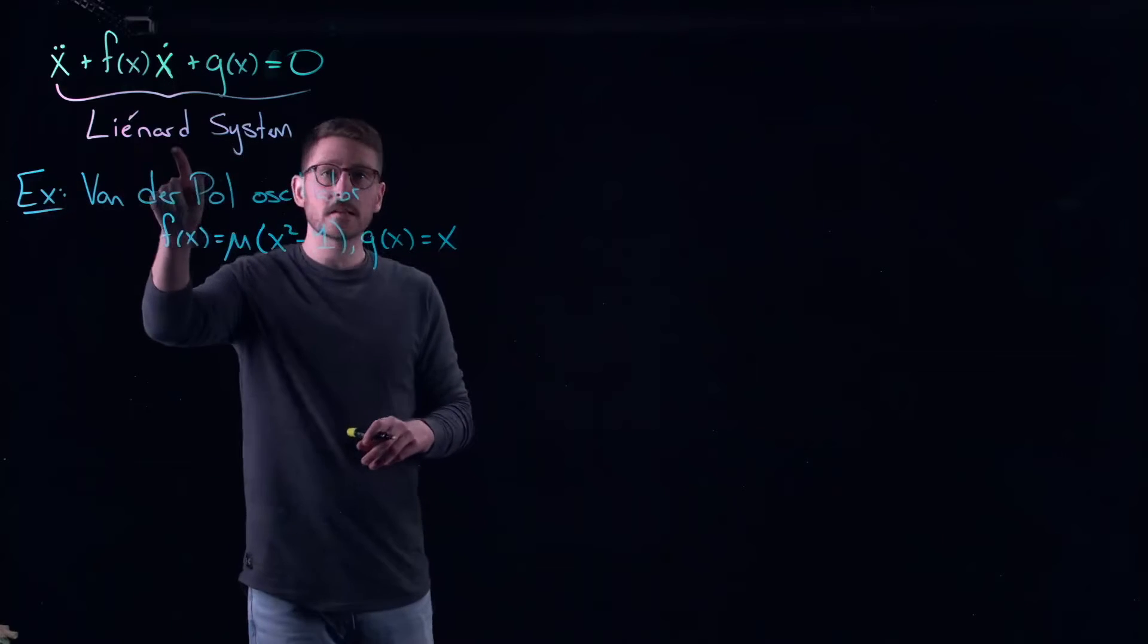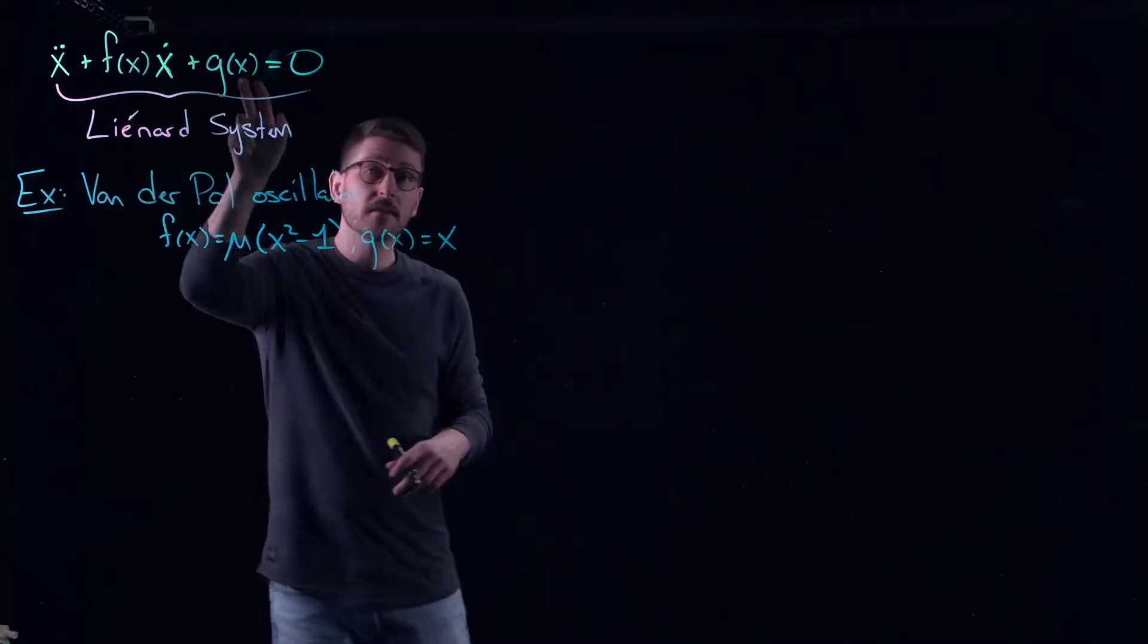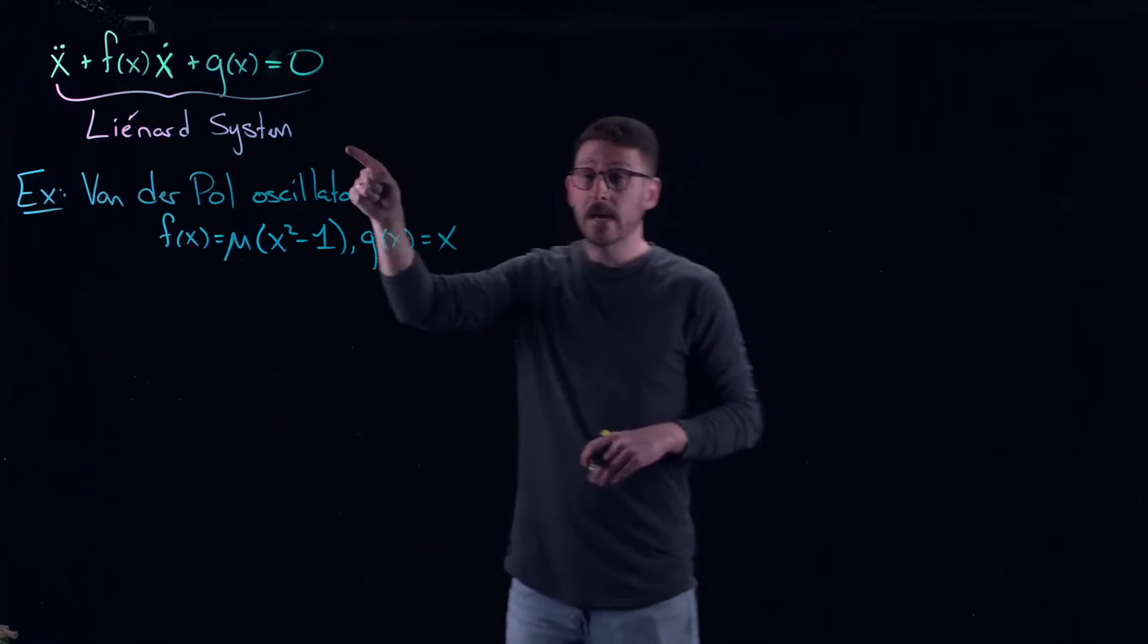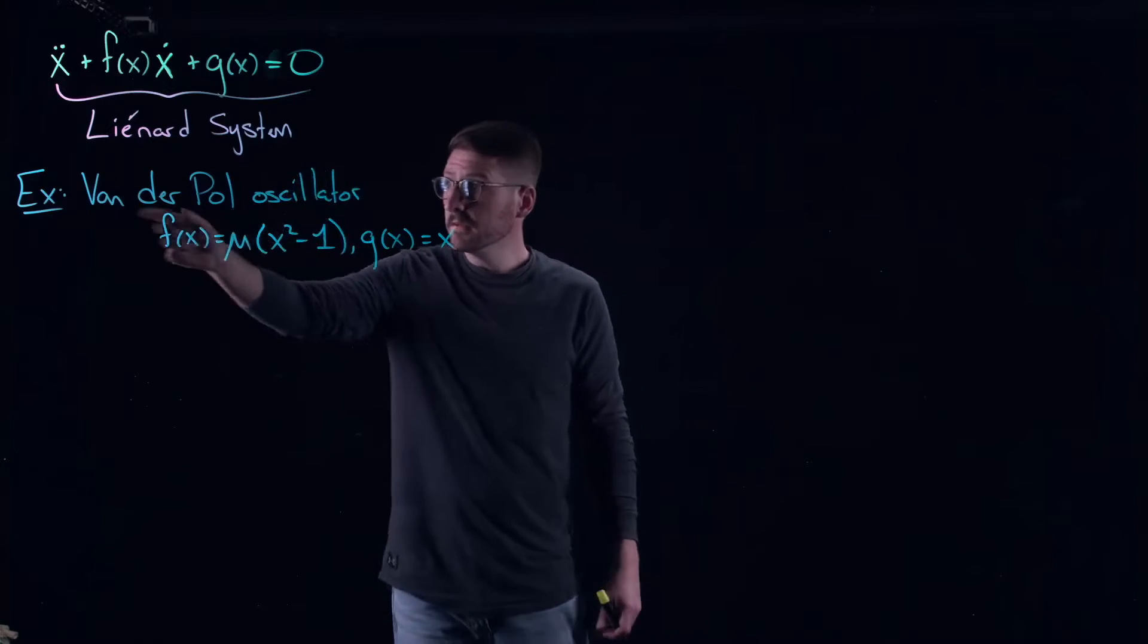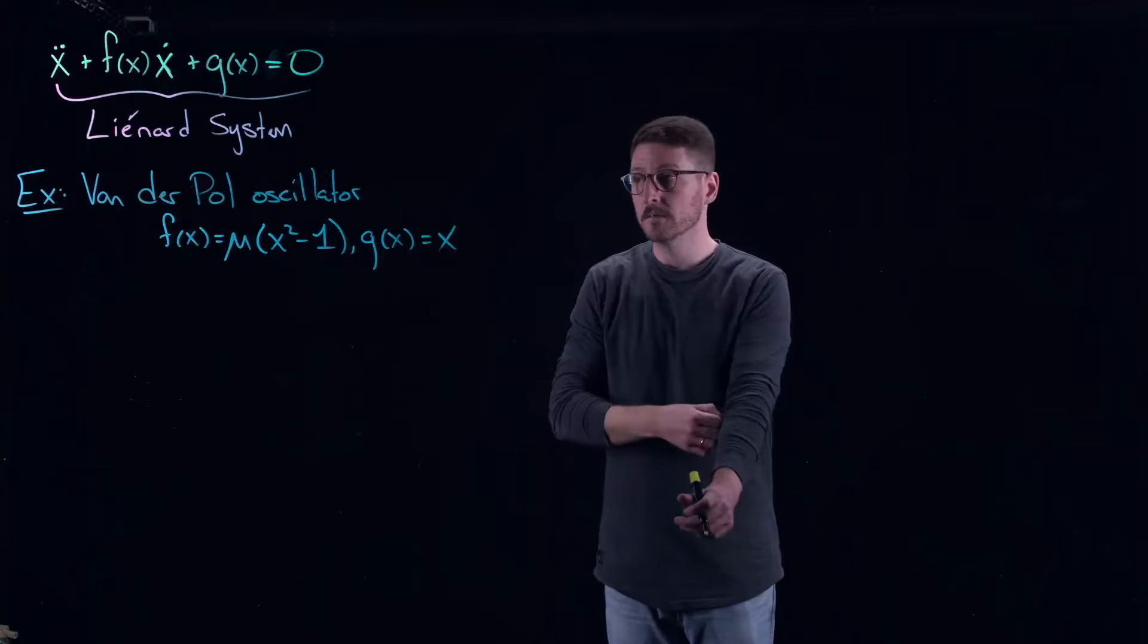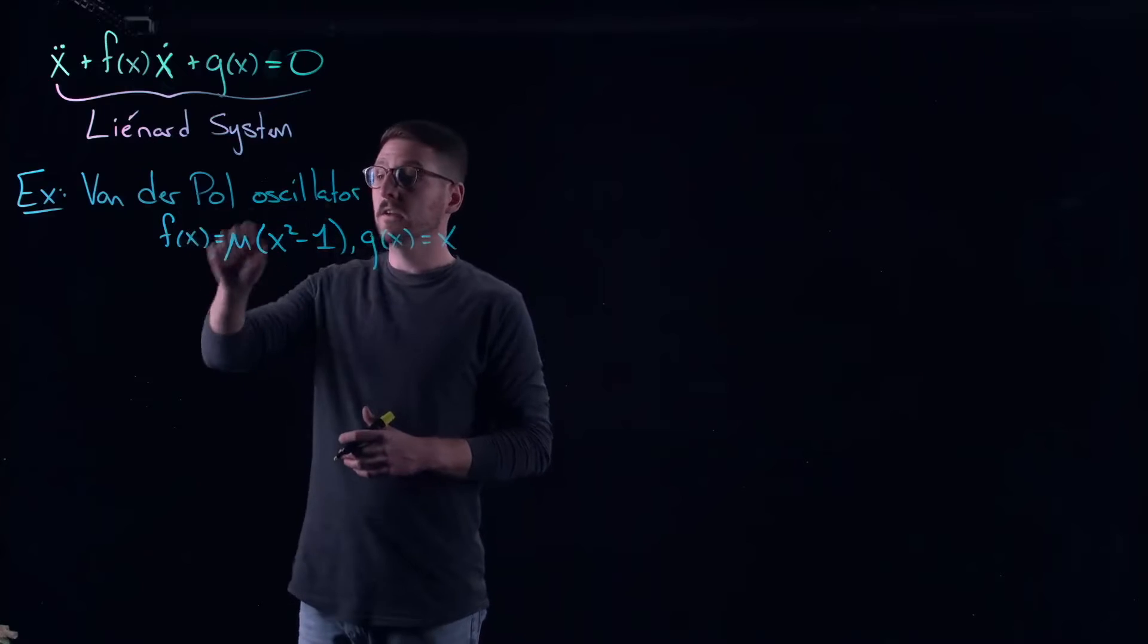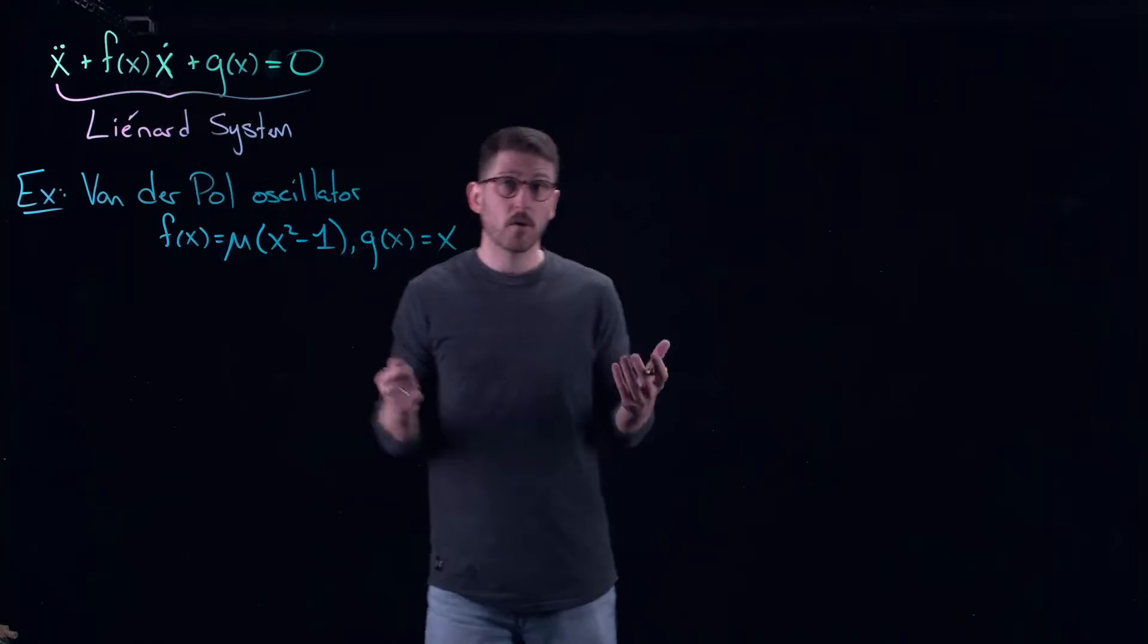Now what's interesting about the Liénard system or the Liénard equation here and in particular the Van der Pol oscillator is that for a variety of f of x and g of x functions we can actually build electrical circuits that mimic this exact behavior that's going to be predicted by these dynamical systems. A very famous example from the Van der Pol oscillator is a very famous book written by James Gleick on chaos. After he completed this book somebody actually built a Van der Pol oscillator and mailed it to them. They're very easy to build.